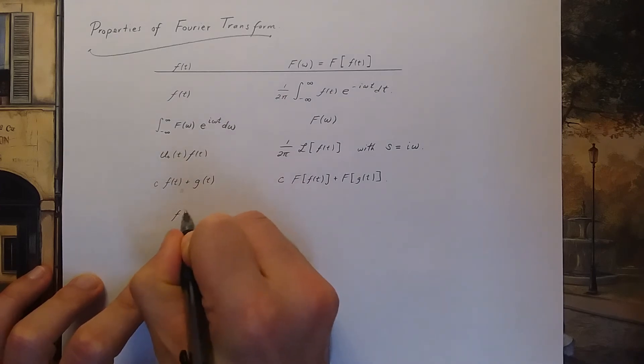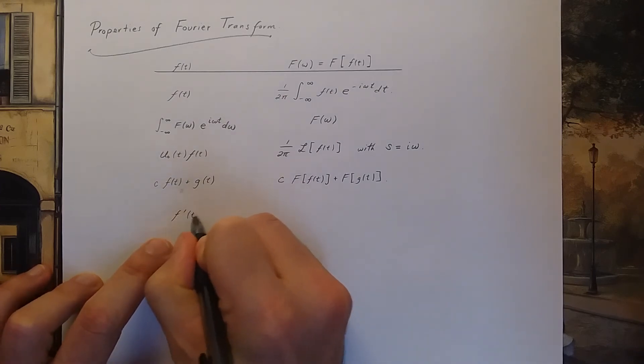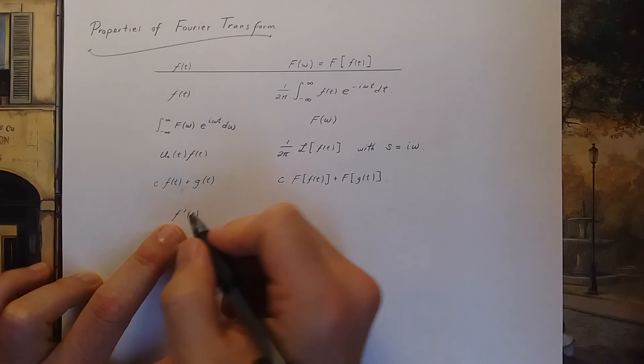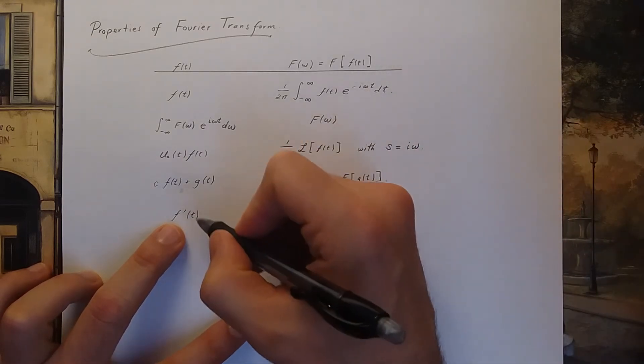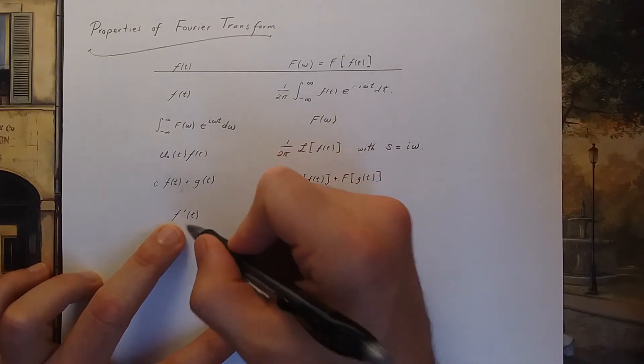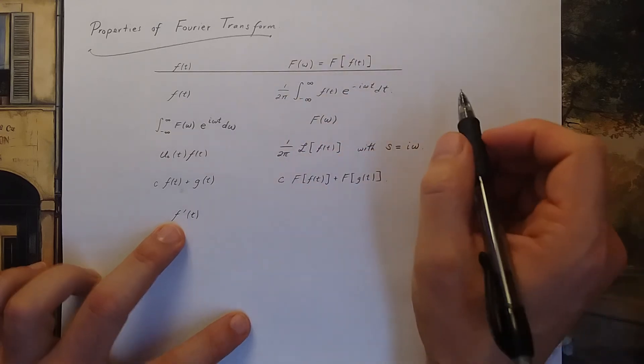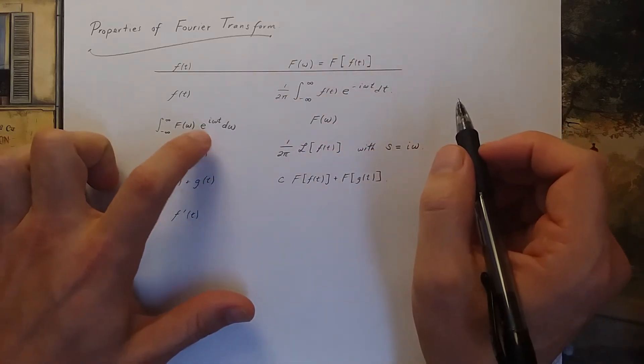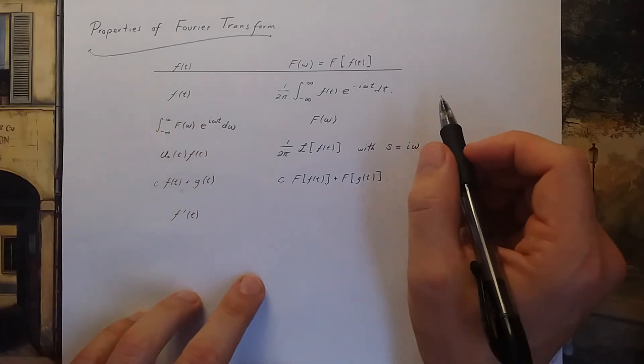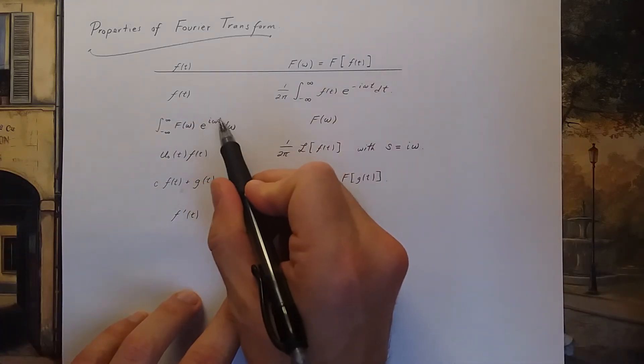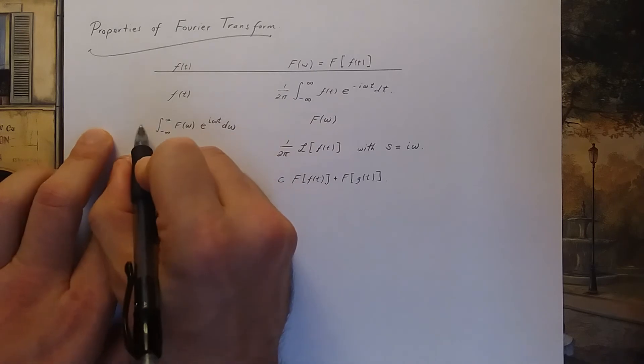So if I have the derivative of a function and I take the Fourier transform with respect to t, you may notice that in this definition here I get an extra omega t. So this is my f of t, you know that's the Fourier relations.